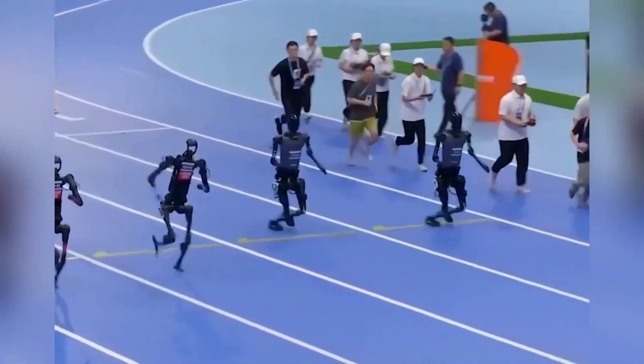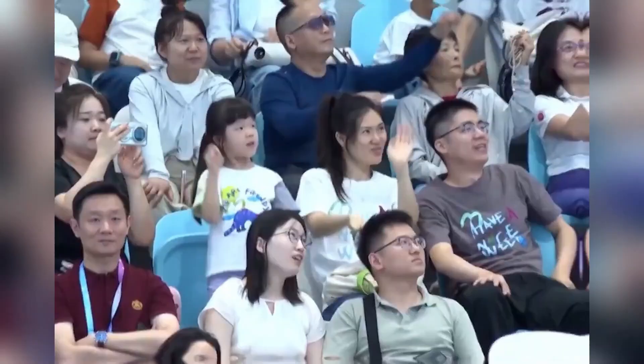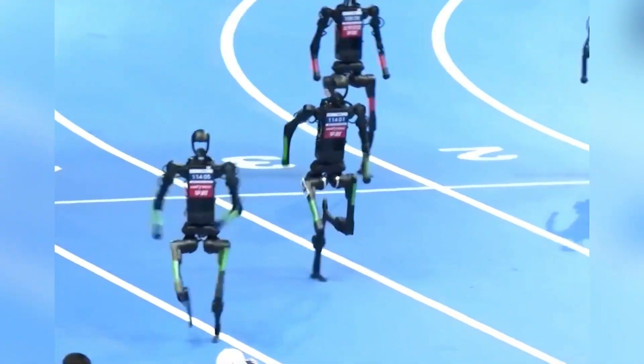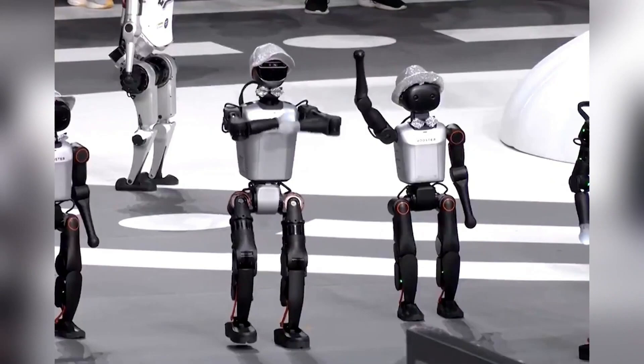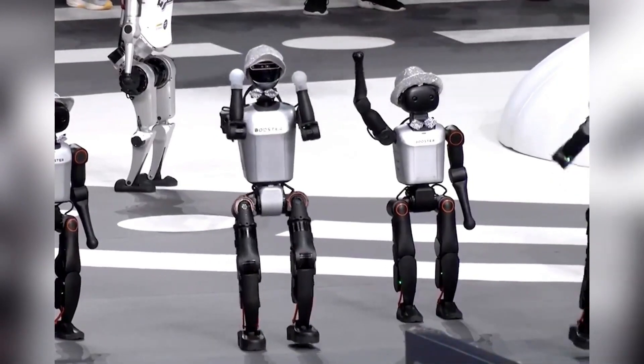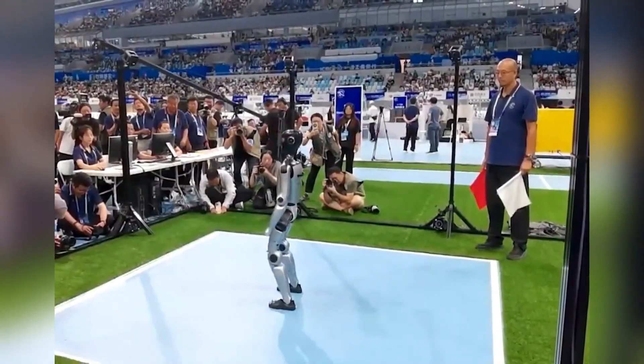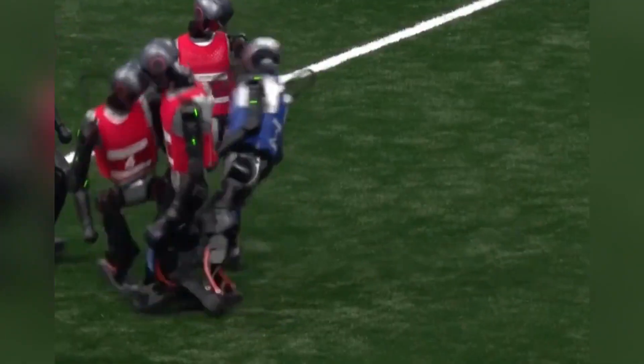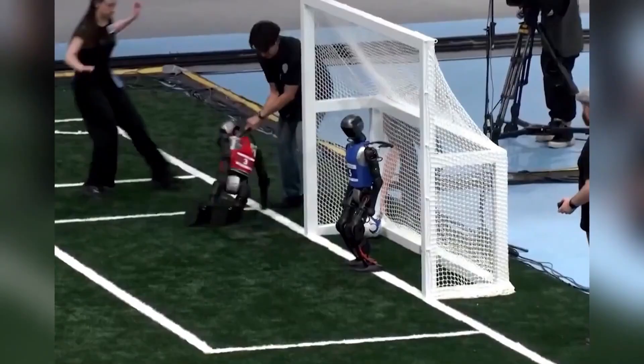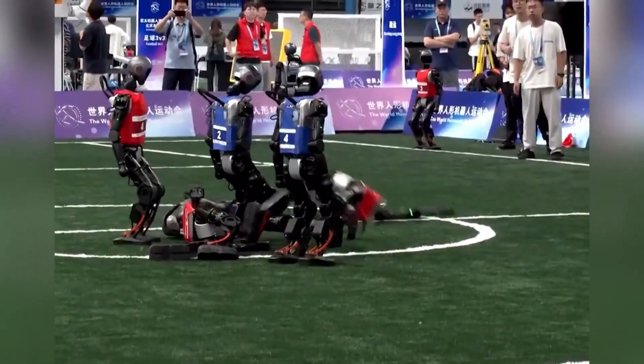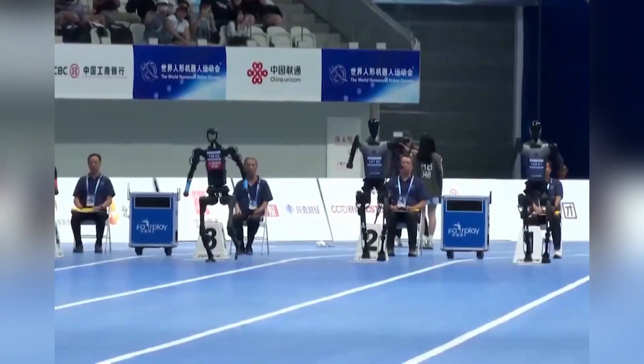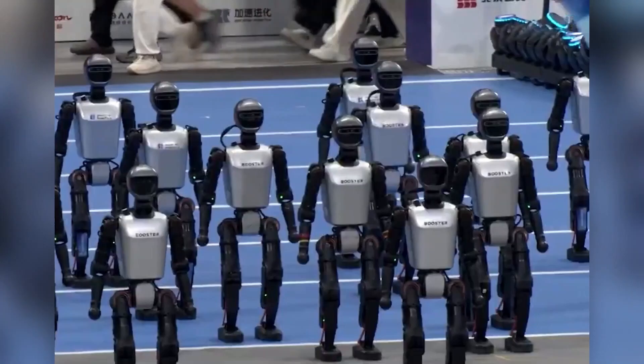So what does all this mean for the future? The humanoid Olympics was both a reality check and a preview. It showed us that robots are capable of remarkable feats. Running, dancing, cleaning, sorting. Imagine what they'll be doing 10 years from now. This event marked the beginning of a new era. Humanoid sports. Just as the original Olympics pushed human athletes to new limits, the humanoid Olympics will push robotic development forward. Each stumble will lead to better balance systems. Each slow task will drive more efficient AI. Each clumsy soccer match will inspire better coordination. And in the process, we'll inch closer to robots that can operate safely and effectively in our homes, workplaces, and cities.